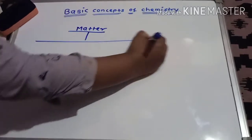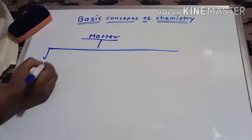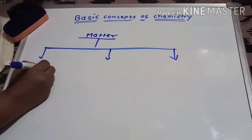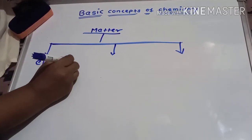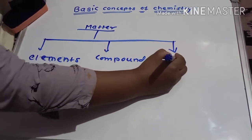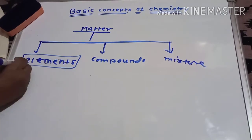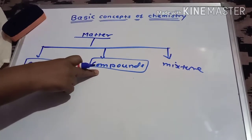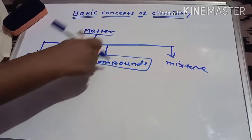On the basis of chemical composition, matter is further classified into three categories: elements, compounds, and mixture. These are the most important terms that you must know and must clarify while studying certain chapters related to chemistry.